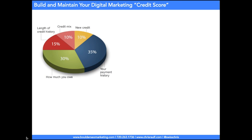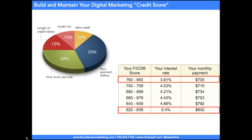If you get all those ingredients right, you'll also build what's called your digital marketing credit score. If you're watching this training from the US, you're probably familiar with the FICO credit score — if you have a high credit score, it's going to be less expensive for you to borrow money; if you have a low credit score, you're not as trustworthy and you'll probably spend more. It's the same with your digital marketing credit score: if you can prove to Google that you're worth it, it will be easier in the long term to get page one rankings and stay up there.